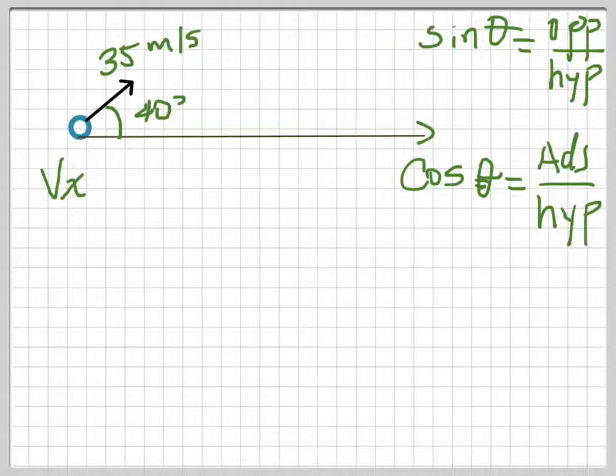The first thing we need to do is build our triangle. This reference is built according to this angle. If we're looking for the x component of the velocity, that means we're looking for this.